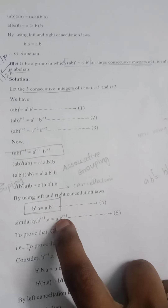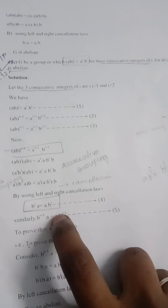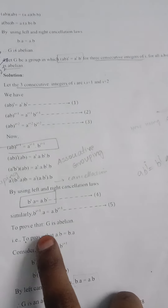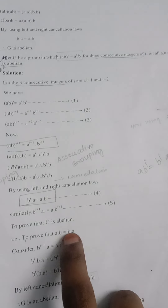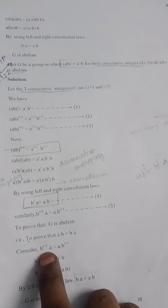Using the consecutive integer i+1, we substitute into the equation. Instead of i we place i+1, giving b^(i+1) * a = a * b^(i+1). We then split b^(i+1) as b^i * b to proceed.